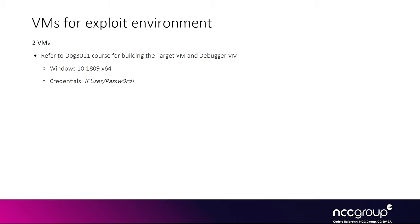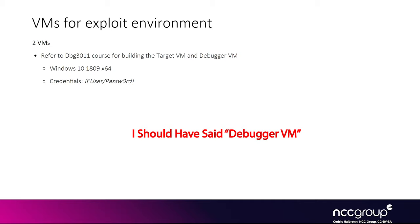As a requirement for this course, you should follow the DBG3011 course for building two virtual machines: one target VM where we run the exploits and can crash and restore from a snapshot, and a debugger VM where we write the exploit source code in C, build the exploit with Visual Studio, and automatically push the compiled exploit onto the target VM. If you don't have these two virtual machines ready, you must refer to that other course first.